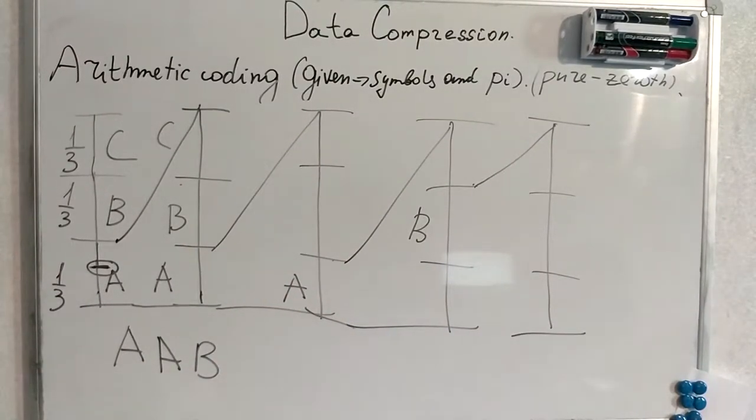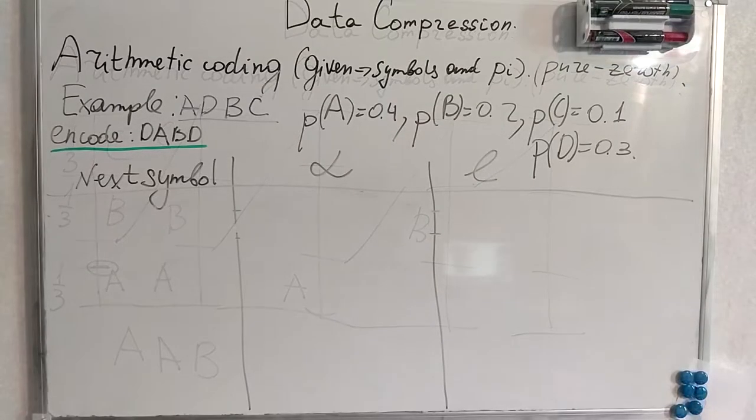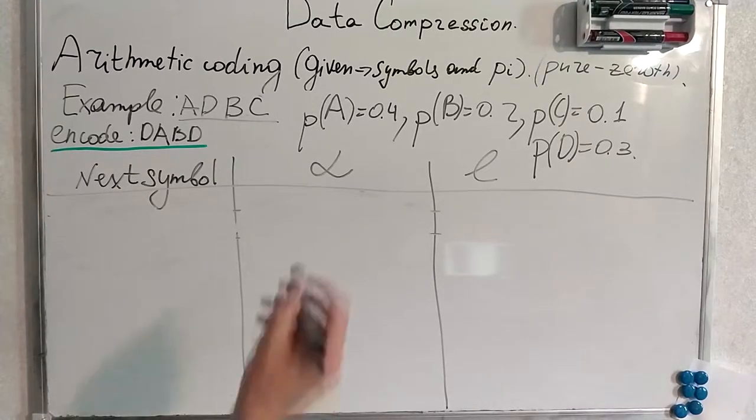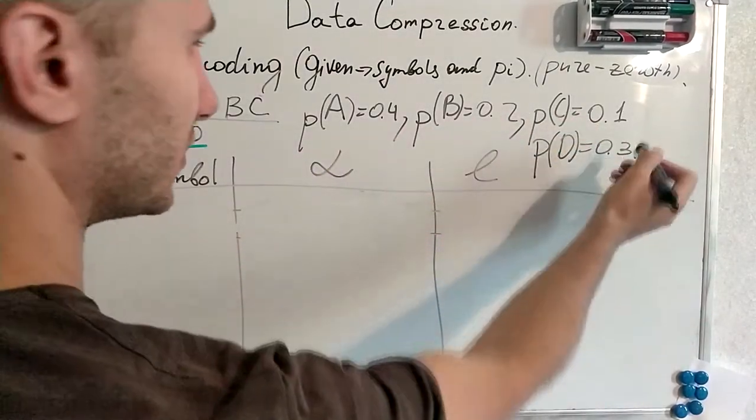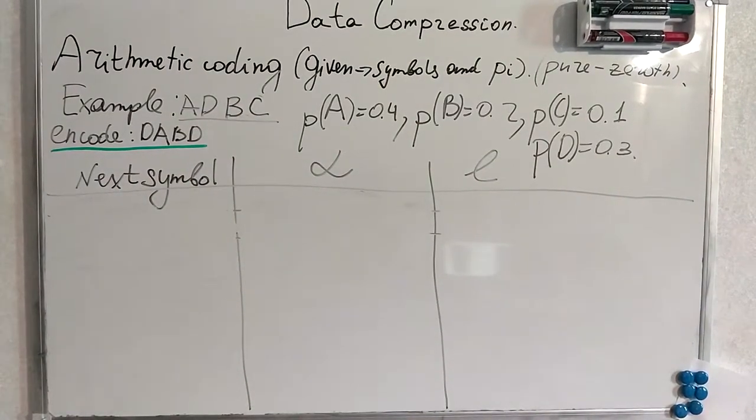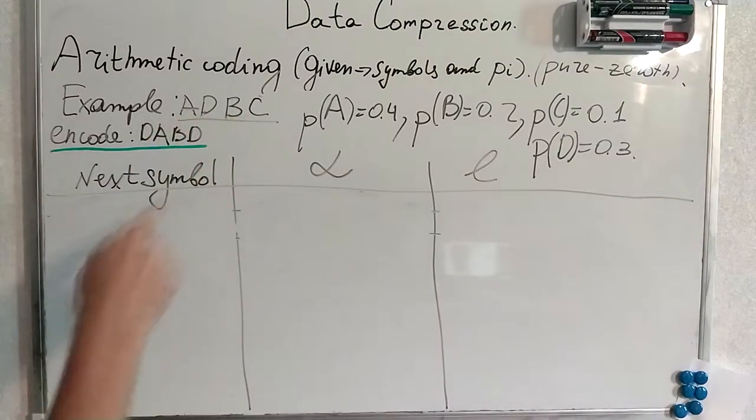But this visual scheme is useful for understanding. But we will use table to really encode something. Now here's our table. We are going to use to encode our symbols. Thus these are our symbols and their probabilities. Very important is the order of the symbols to form the interval.